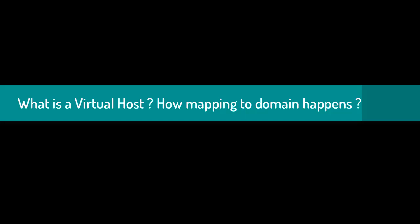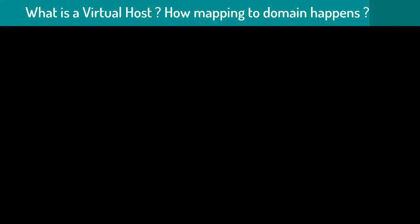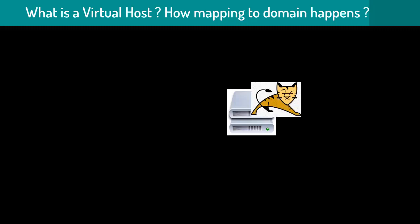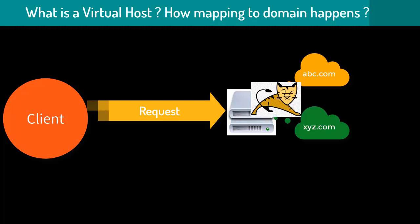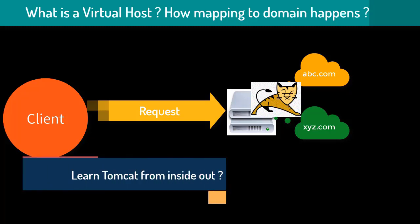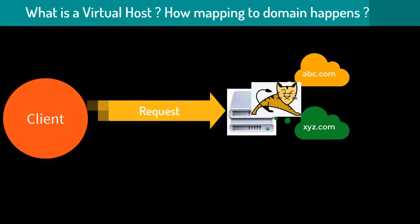What is a virtual host, and how does a server identify the application to which a request has to be forwarded? A virtual host is a concept in which we run multiple domains on the same physical machine. Even though we have multiple domains, the IP of those domains will always point to the same machine. For example, abc.com and xyz.com can both run on the same Tomcat instance — if both domains point to the same machine IP, they form part of a virtual host.